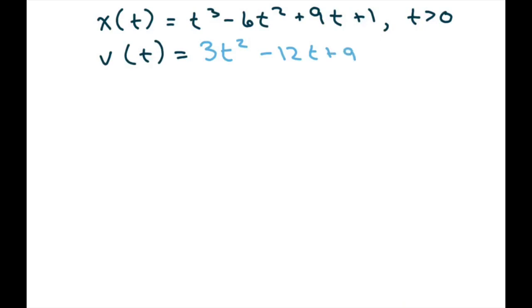Now to find our critical values, we're going to set t equals 0 and factor this. Factor out of 3, you get t squared minus 4t plus 3.